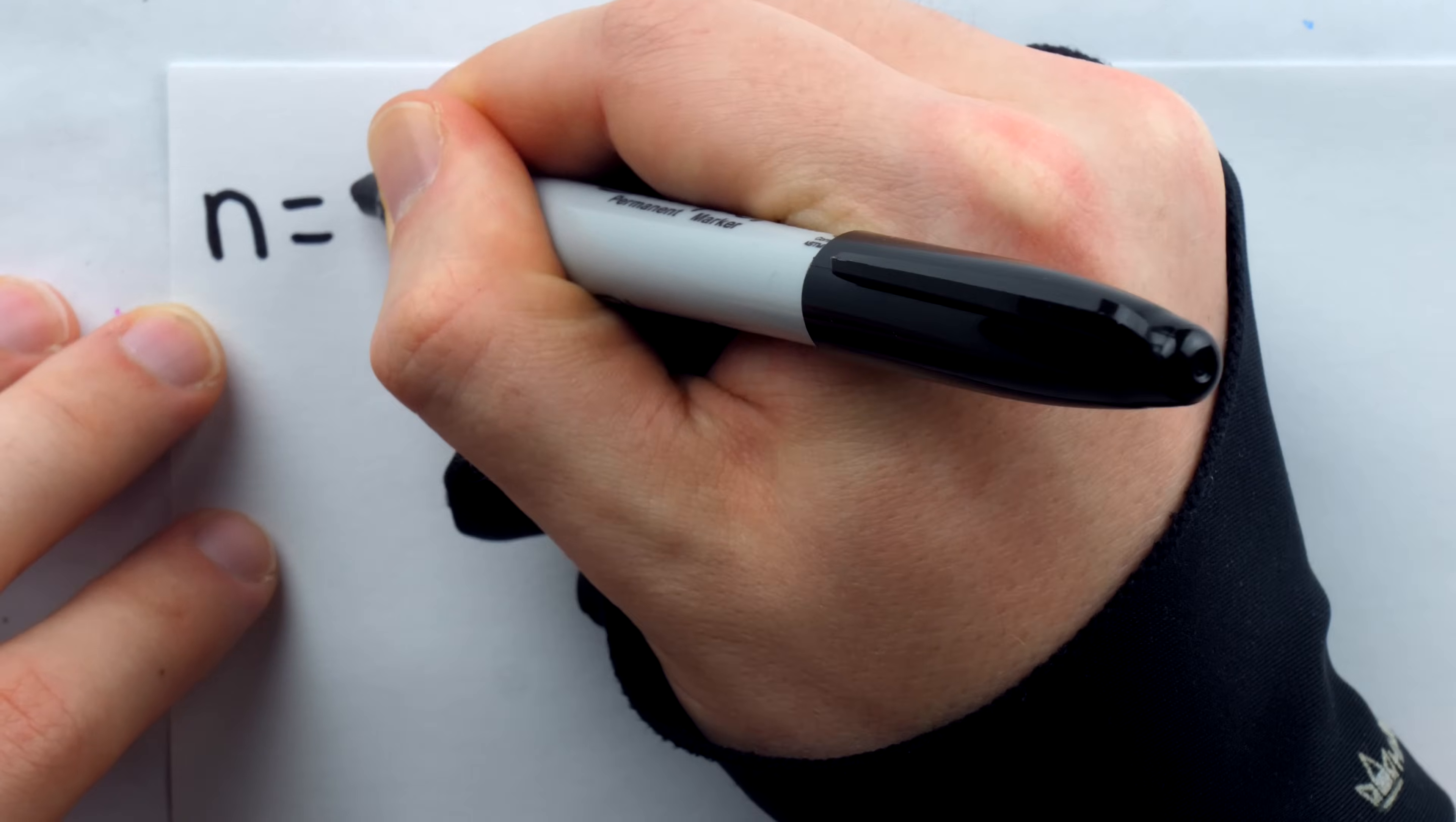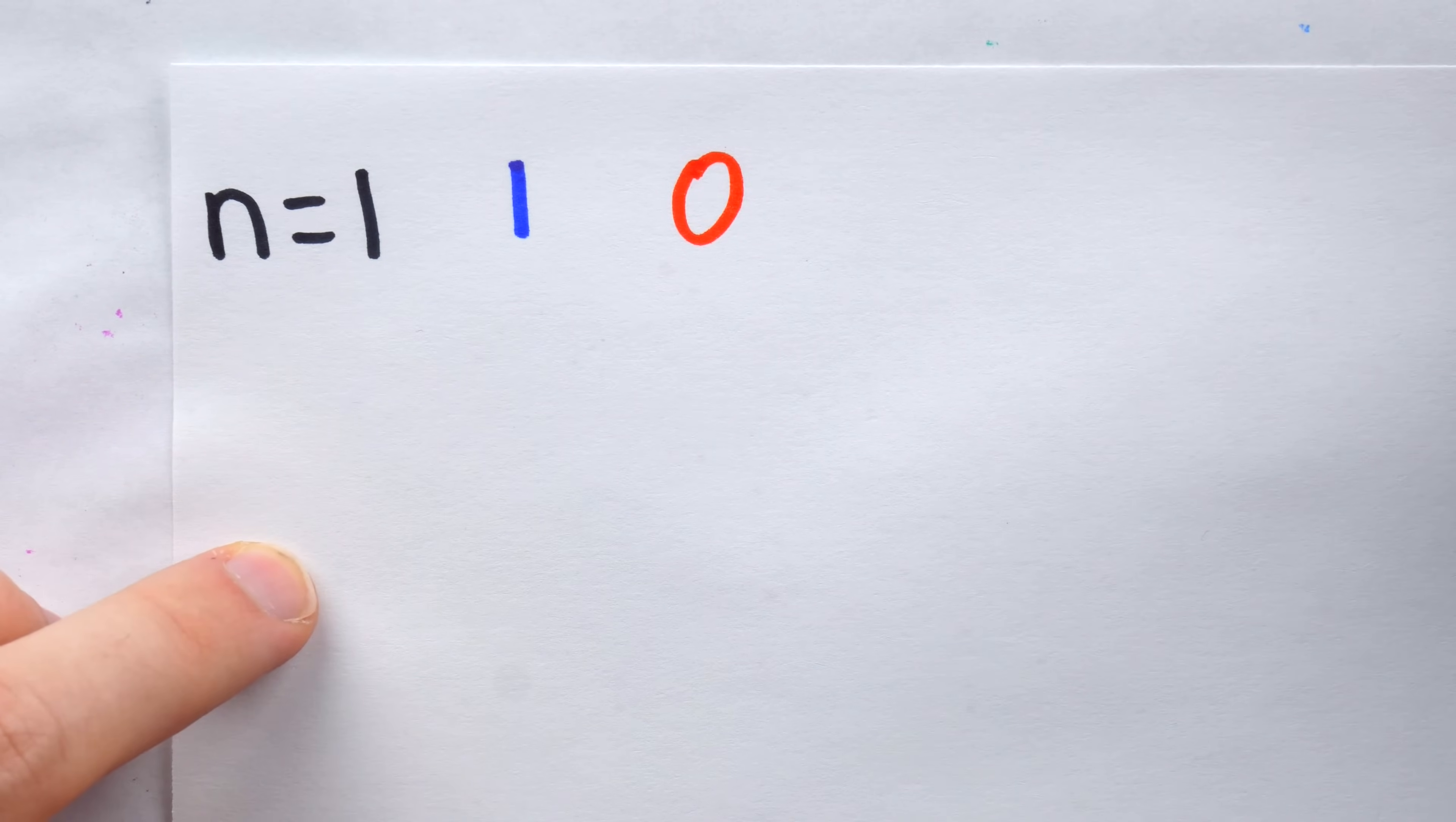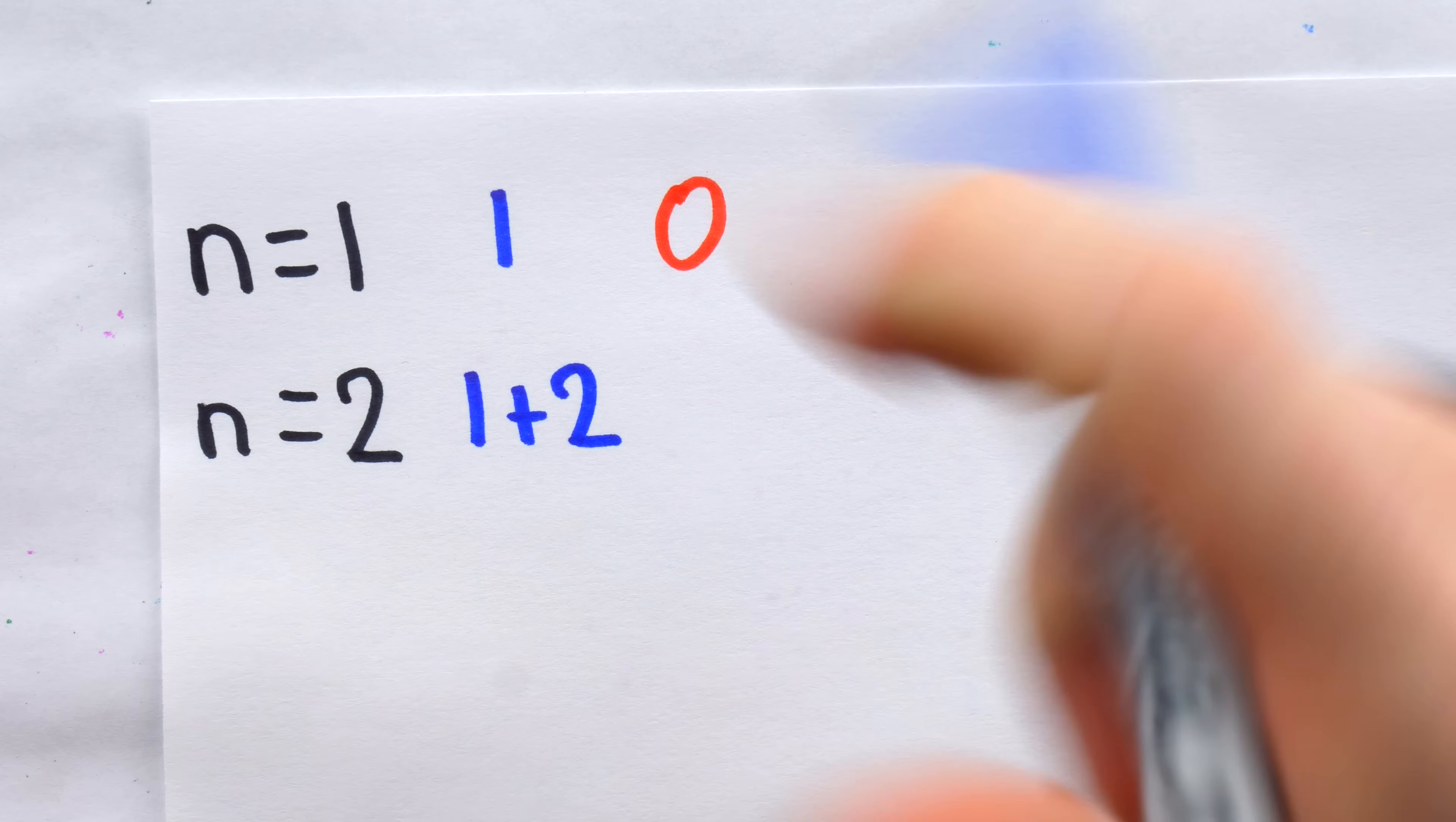In this case, the best we can do is just the number 1. This approximation of e is accurate to zero decimal places. However, if n is equal to 2, then we can use the first two digits, both 1 and 2. In this case, we can get a more accurate approximation using 1 plus 2. That's 3.